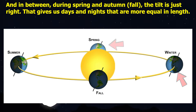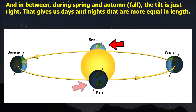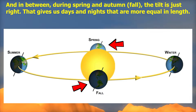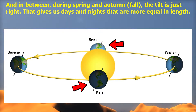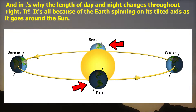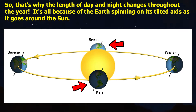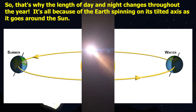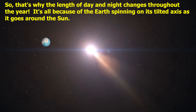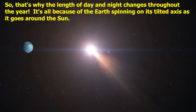And in between, during spring and autumn, the tilt is just right. That gives us days and nights that are more equal in length. So that's why the length of day and night changes throughout the year — it's all because of the earth spinning on its tilted axis as it goes around the sun.